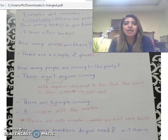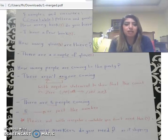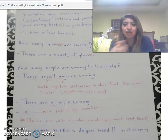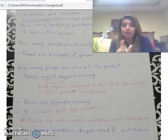Question 3: 'How many people are coming to the party?' We will see different answers. Answer 1: 'There aren't anyone coming.' Here we use the quantifier 'any' with the negative to make the answer a negative one. We can use 'any' with both countable and uncountable, but now we're talking about countable ones.